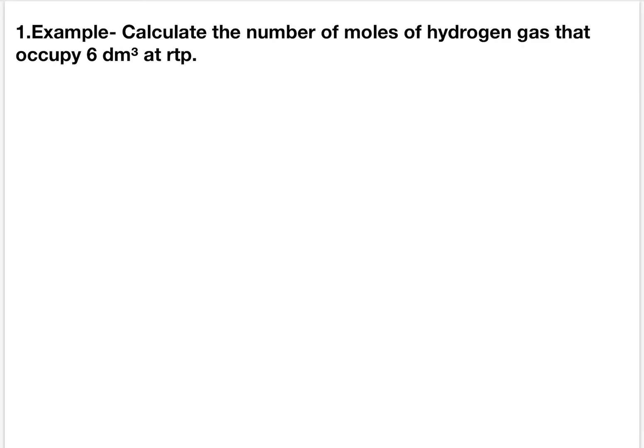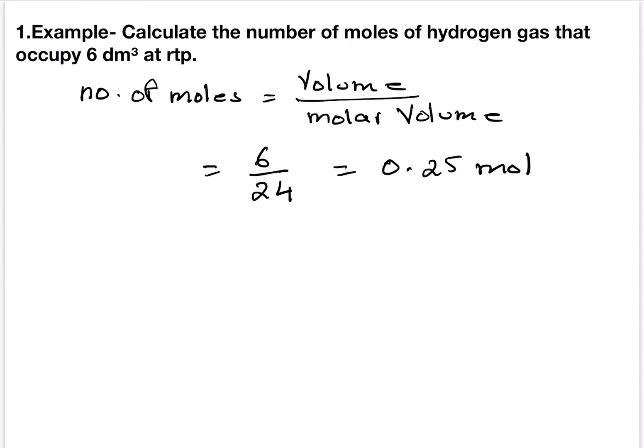So number of moles equals to volume divided by molar volume. Therefore we have hydrogen gas that occupies 6 dm³ so we can take the volume as 6 on the top divided by 24. This is the molar volume at room temperature and pressure. So this will be equal to 0.25 mole.